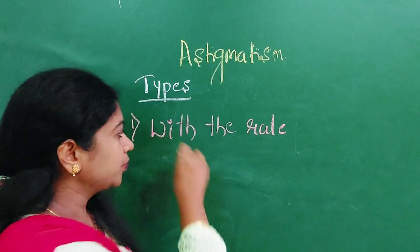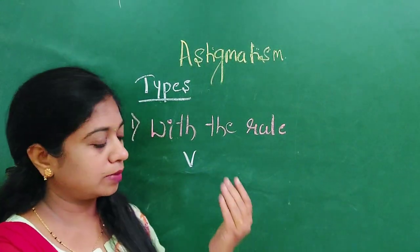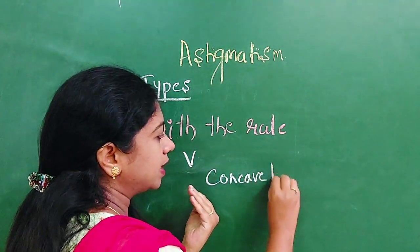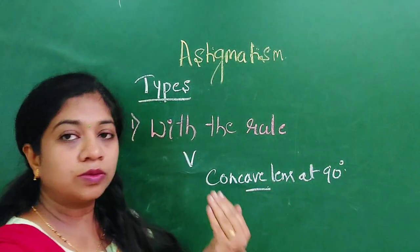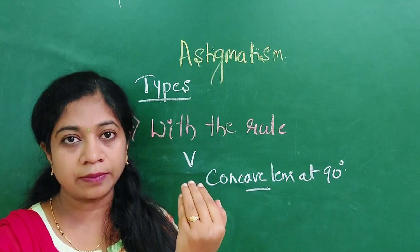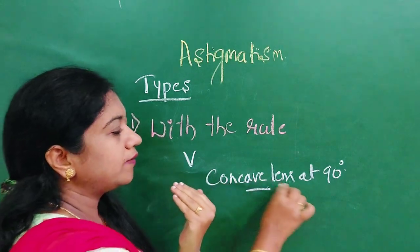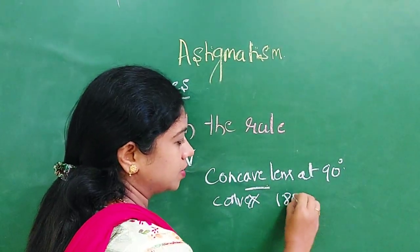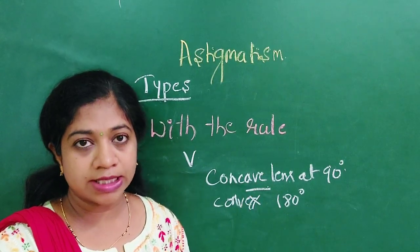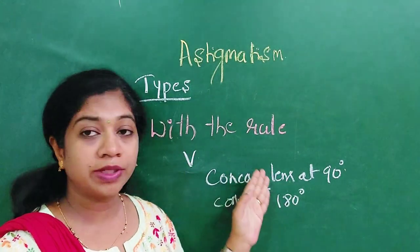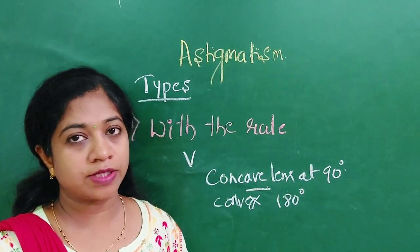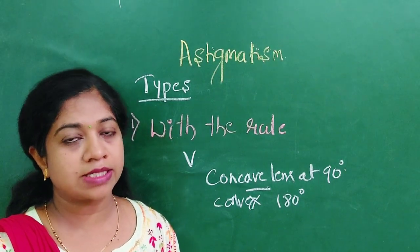In with-the-rule astigmatism, the vertical meridian is steeper, meaning there is a myopic change in the vertical meridian. To correct it, you use a concave lens at 90° or equivalently a convex lens at 180°. With-the-rule astigmatism is more common in the younger age group. Against-the-rule astigmatism is exactly opposite. So the four types are: with-the-rule, against-the-rule, oblique astigmatism, and bi-oblique astigmatism.